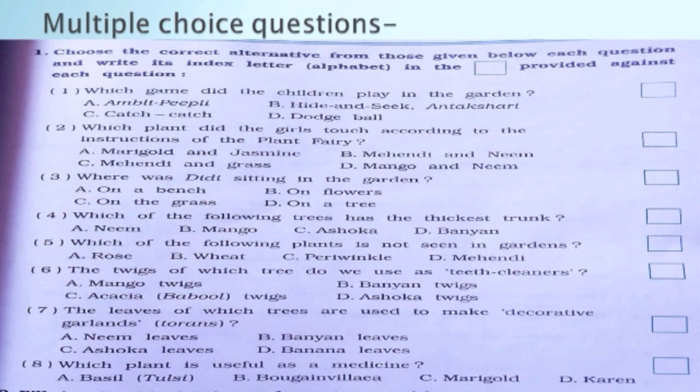Question seven: the leaves of which trees are used to make decorative garlands? Options are: neem leaves, banyan leaves, ashoka leaves, banana leaves.